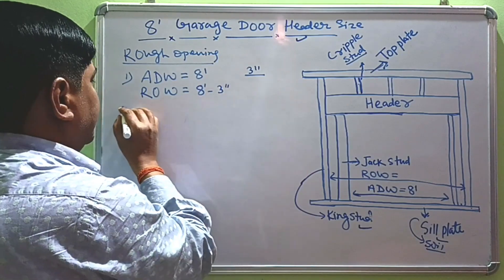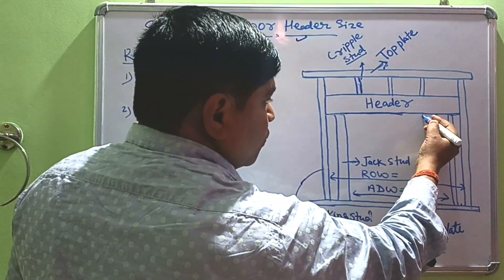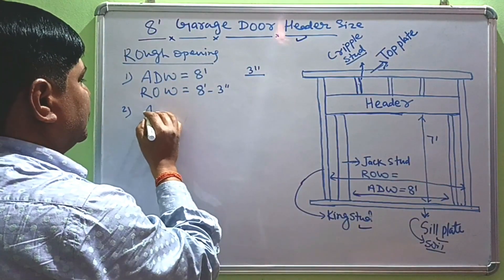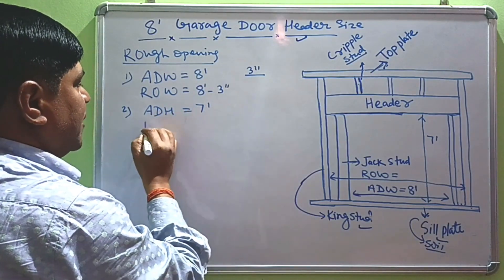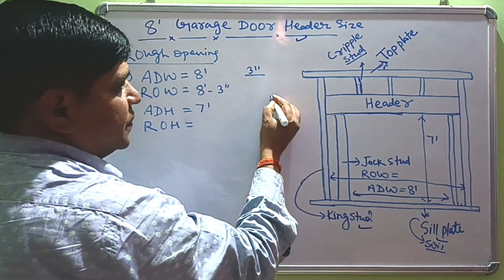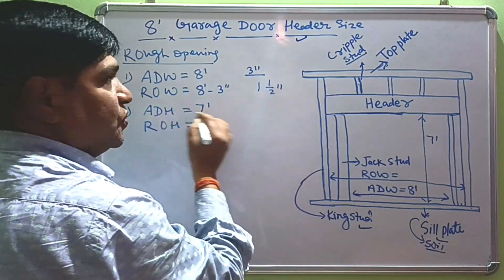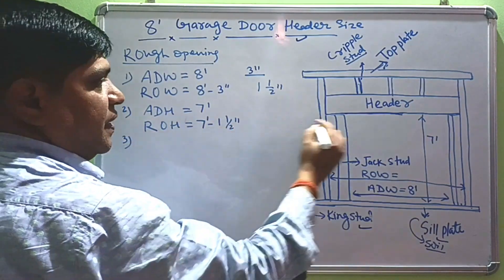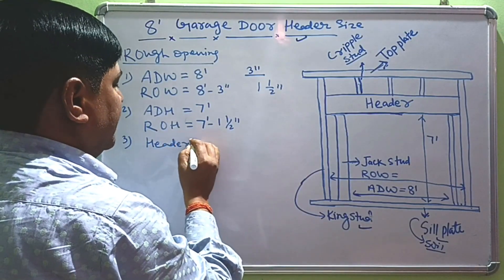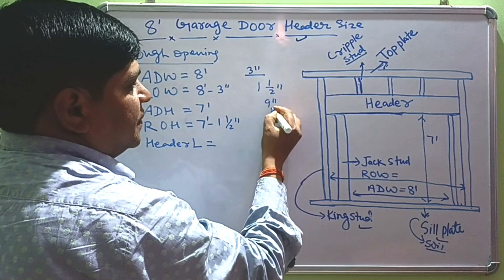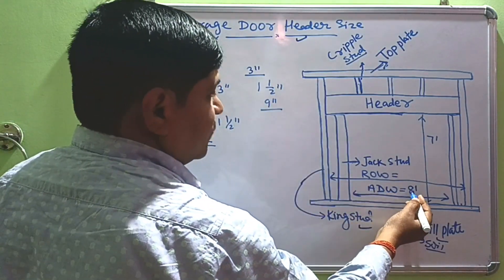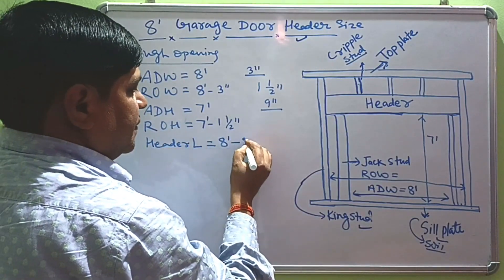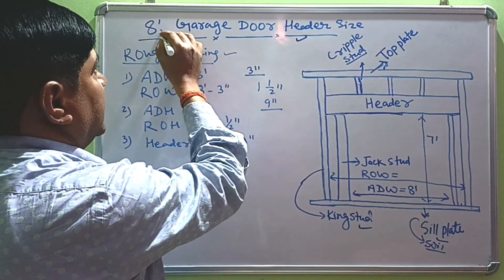This one is the door height, which is about 7 feet. The actual door height is about 7 feet. The rough opening height is about 1.5 inches taller than the actual door height, so it is about 7 feet 1.5 inches. The header length is generally 9 inches longer than the actual door width. Since the actual door width is 8 feet, the header length is about 8 feet 9 inches.